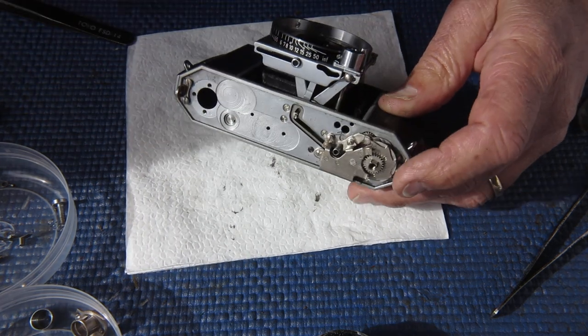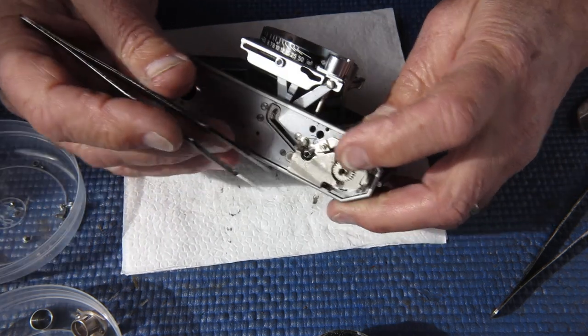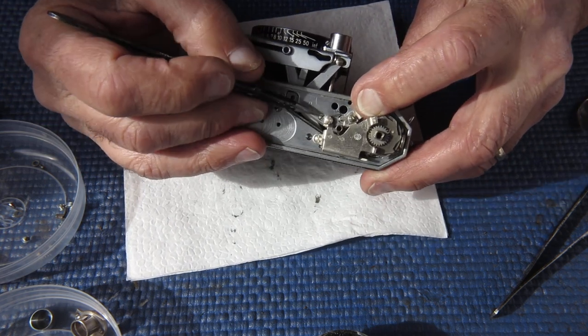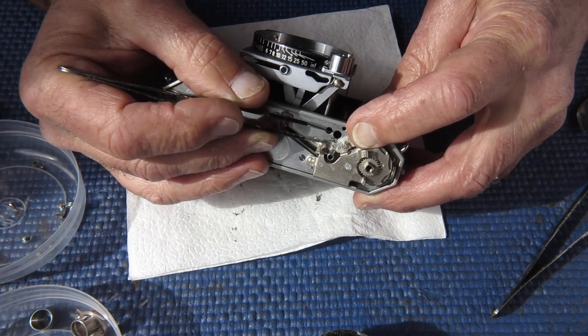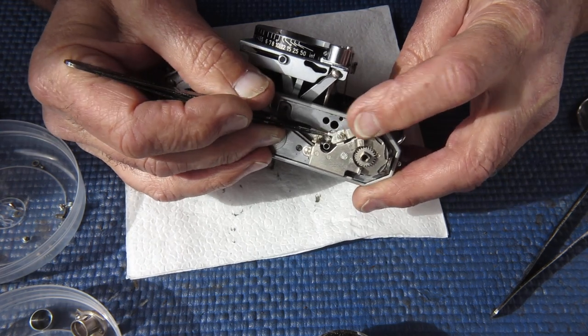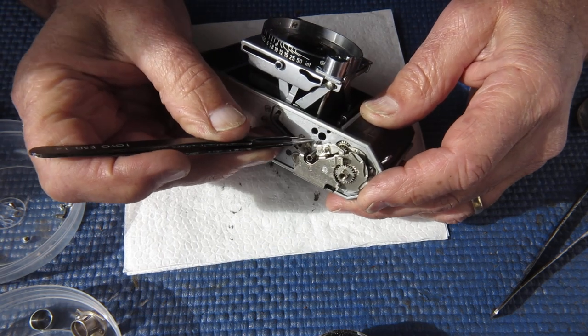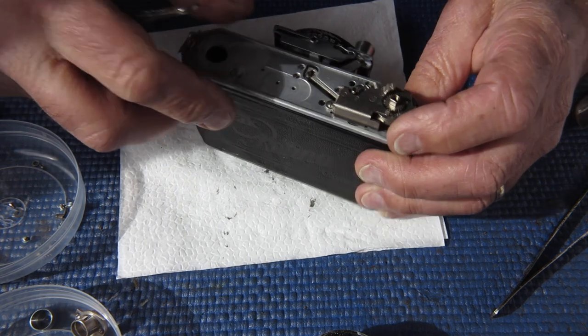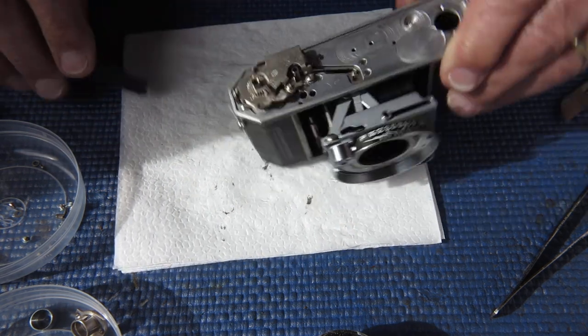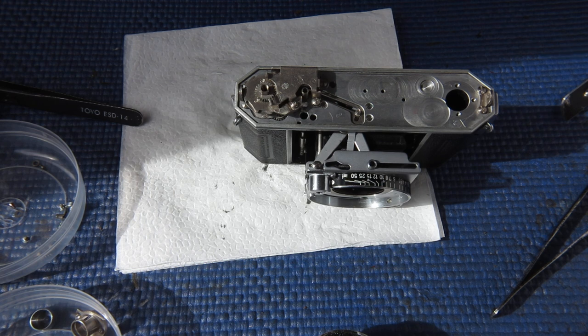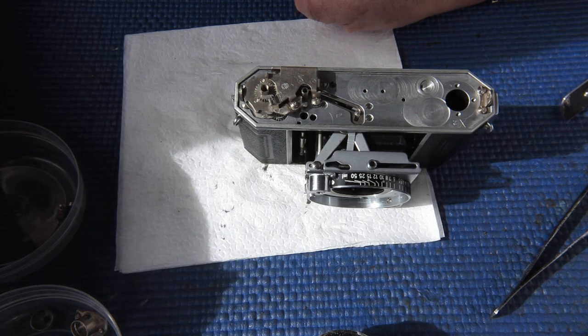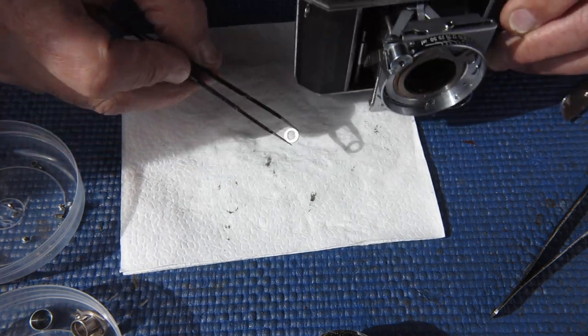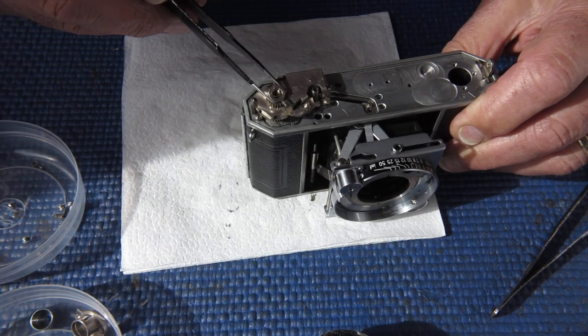And we need to hook this spring into place, so that it pushes the lock lever like that. So our lock lever's in place. We need to fit our spacer. That spacer ring needs to go on. This pops on the top.